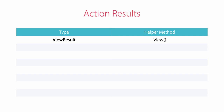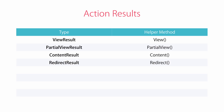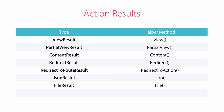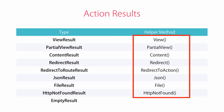ViewResult is one of the action results you work with most of the time. Other types include: PartialViewResult to return a partial view, ContentResult to return simple text, RedirectResult to redirect the user to a URL, RedirectToRouteResult to redirect to an action, JsonResult to return a serialized JSON object, FileResult to return a file, HttpNotFoundResult to return a 404 error, and EmptyResult used when an action doesn't need to return any value. For all these types except EmptyResult, we have a helper method in the base controller class.